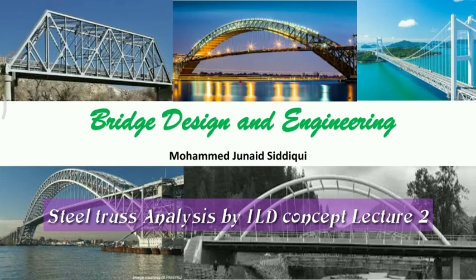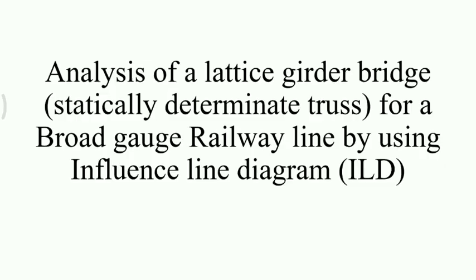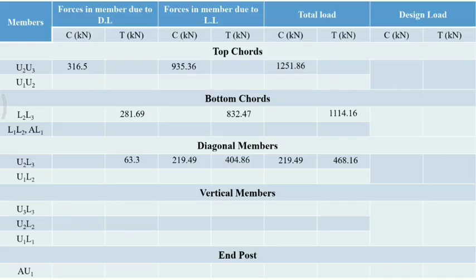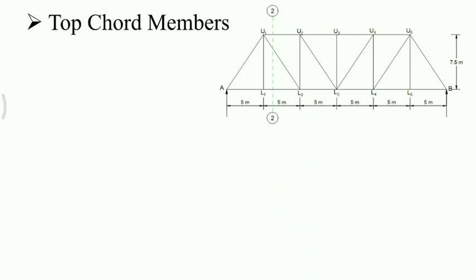Good morning students. I am Mohamed Junesh Shiddiqui. Welcome to the bridge design and engineering subject. This is lecture 2 of steel truss analysis using the ILD concept. In lecture 1, we started the analysis of a lattice girder bridge for a broad gauge railway line. We analyzed members U2U3, U2L3, and L2L3. The forces of these members are shown in the table. Now we will analyze section 2-2, specifically members U1U2, U1L2, and L1L2.